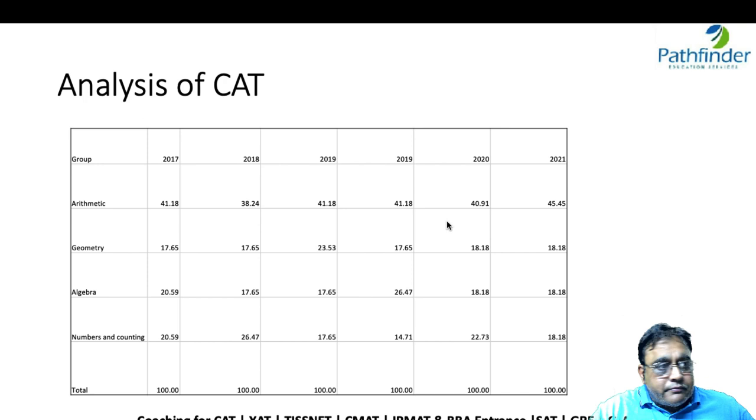Look at arithmetic. The percentage has varied from a minimum of 38 to a maximum of 45. You can safely assume that 40 percent of the questions will still be from the arithmetic section.